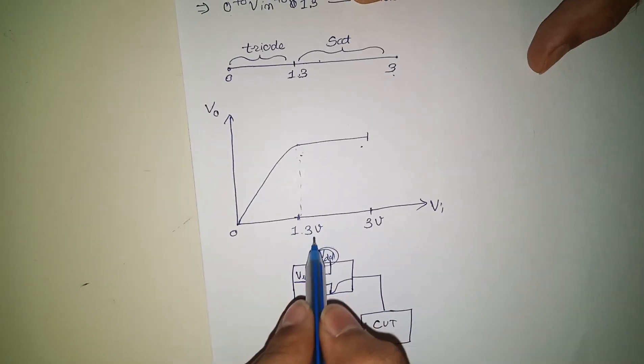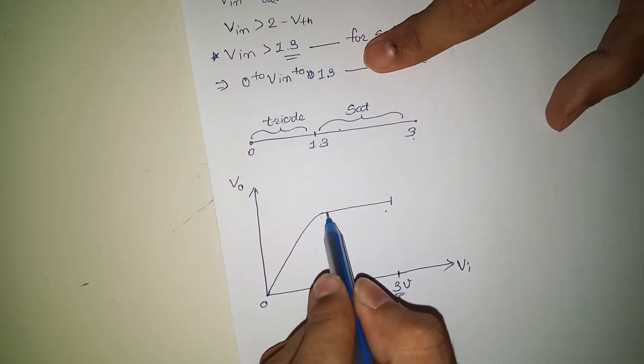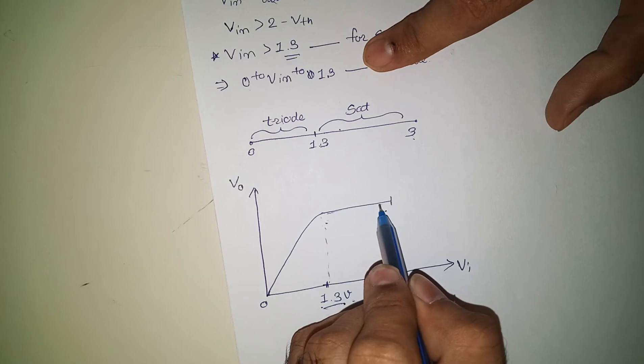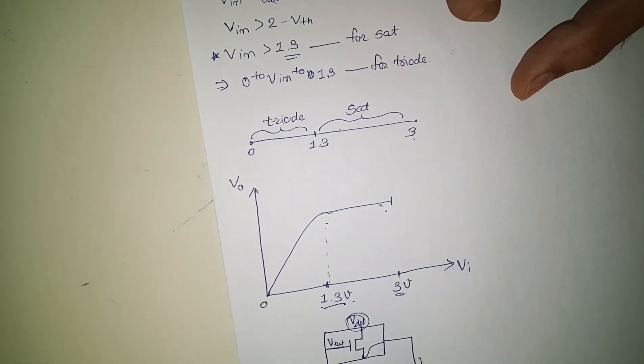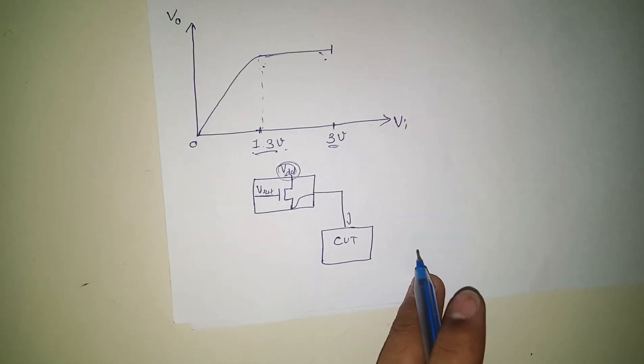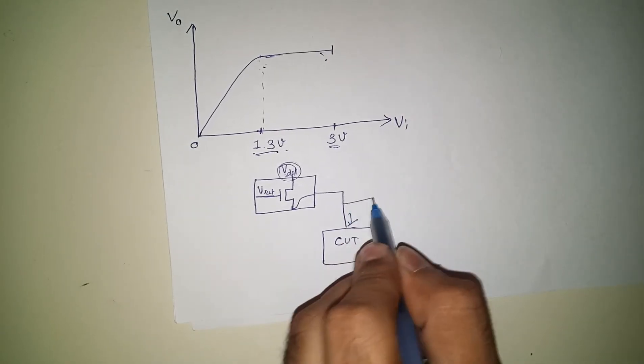But it can give enough current supply to this circuit, basically. So ultimately this voltage will be constant, why? Because the gate supply is constant.